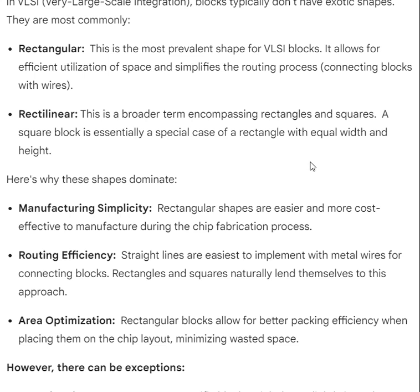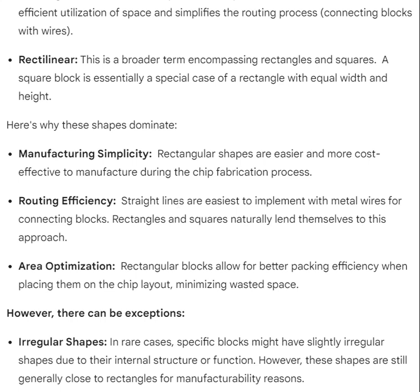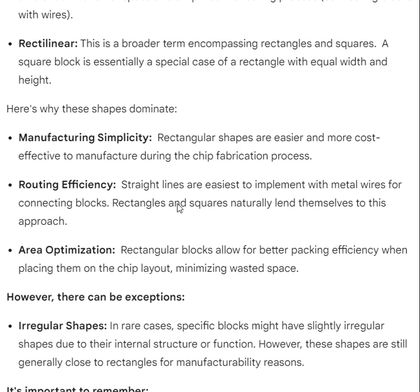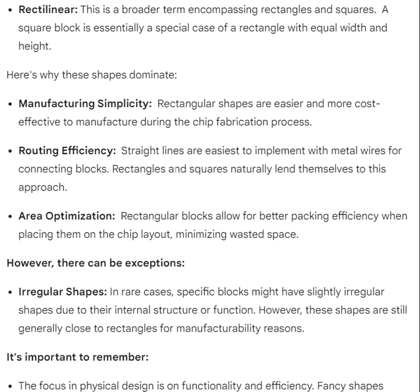A square block is essentially a special case of a rectangle with equal width and height. Here's why these shapes dominate: manufacturing simplicity — rectangular shapes are easier and more cost-effective to manufacture during chip fabrication. Routing efficiency — straight lines are easiest to implement with metal wires for connecting blocks, and rectangles and squares naturally lend themselves to this approach.